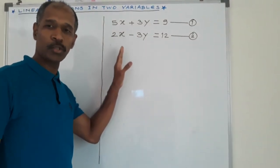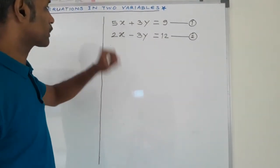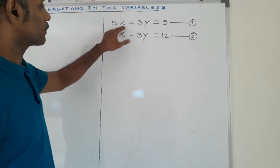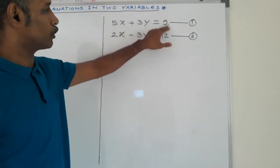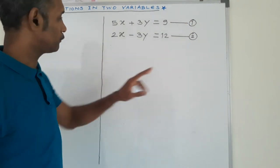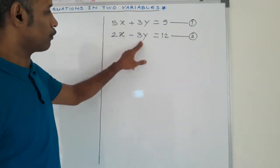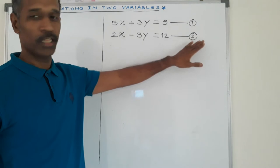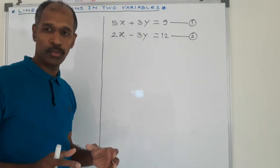Linear equations in two variables. Our first example: 5x plus 3y is equal to 9, equation number 1. 2x minus 3y is equal to 12, this is equation number 2.